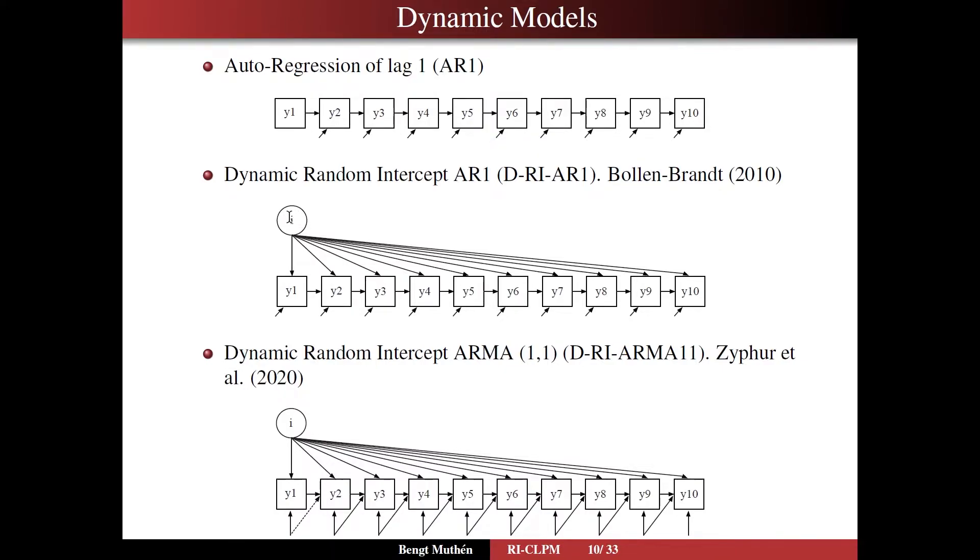So the random intercept, the correlation across time or influence of I across time goes through the Y variables and not only influences Y1, but also Y2 indirectly through Y1 and directly. So it has a different structure altogether than the RI CLPM model.